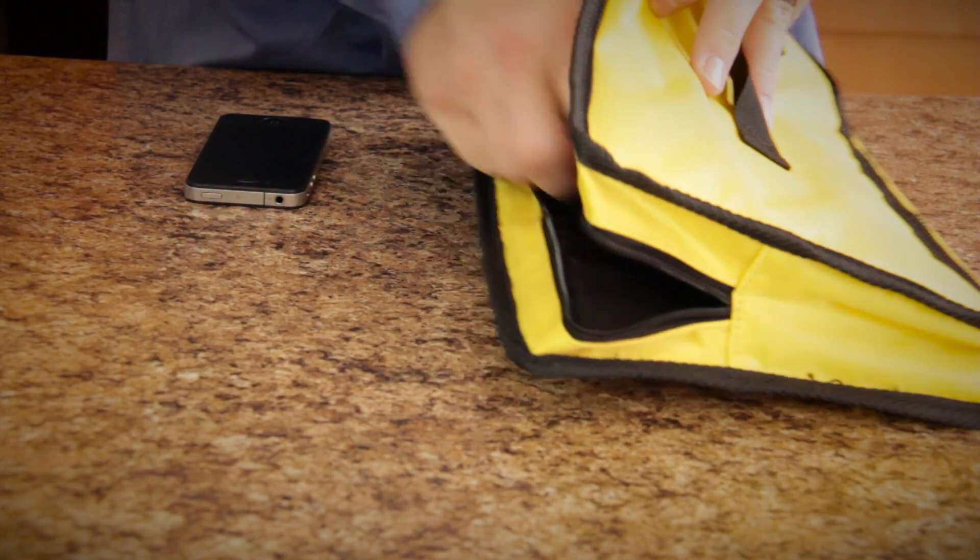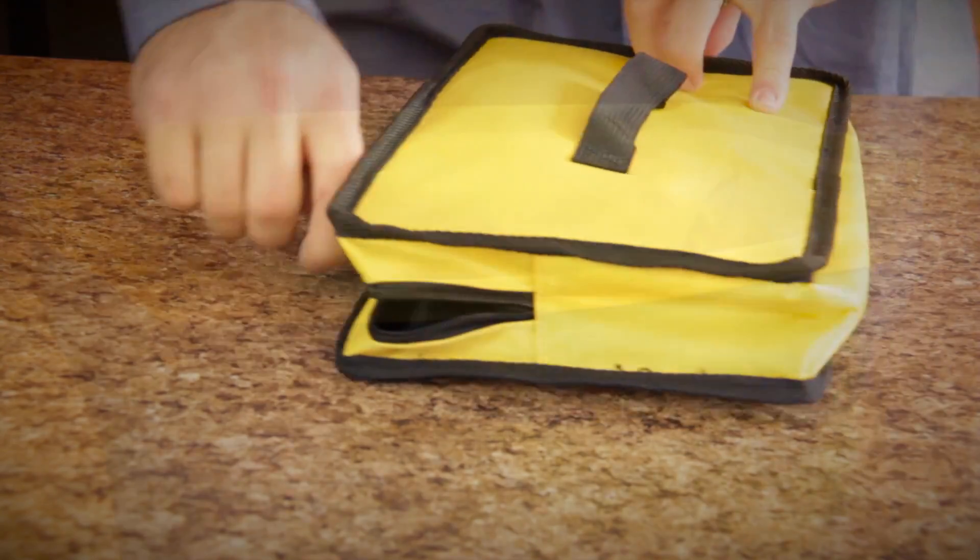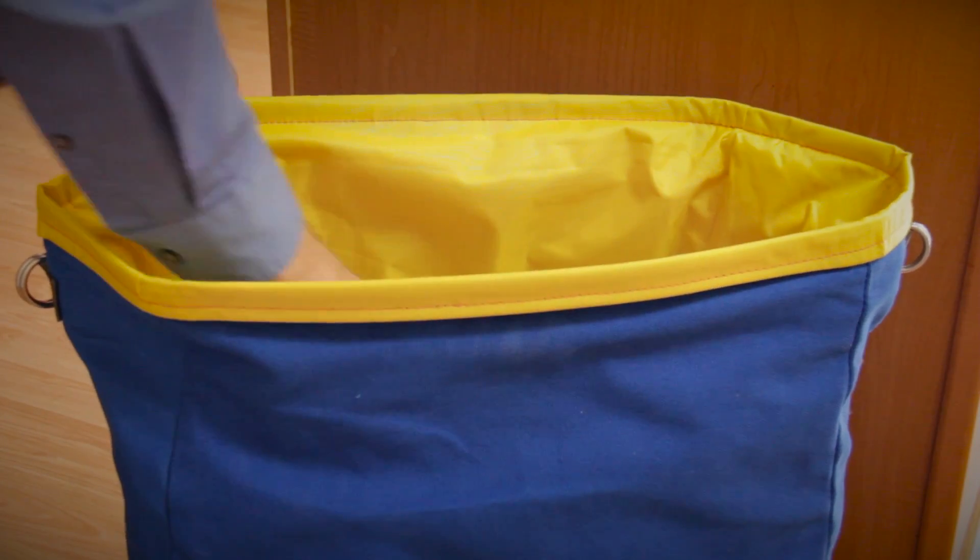Place any accessories or other small electronic devices into the accessory pouch and then zip it closed. Place the pouch inside the shielding bag on top of the fuel-less generator. Even if you don't have any accessories, you'll still want to place the accessory pouch inside the shielding bag because this ensures a tight seal when you're done.